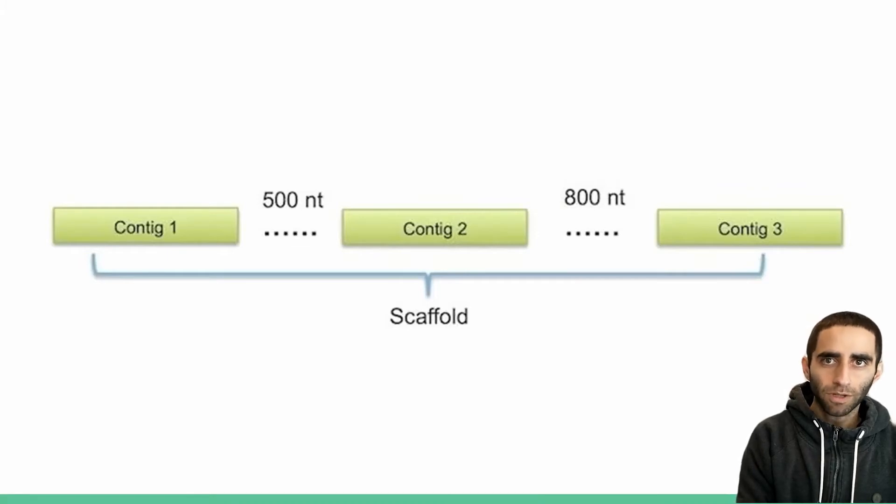A scaffold, on the other hand, is a sequenced order of contigs with gaps between them. The order of the contigs in a scaffold of a correctly assembled genome correspond to their relative order in the original genome.